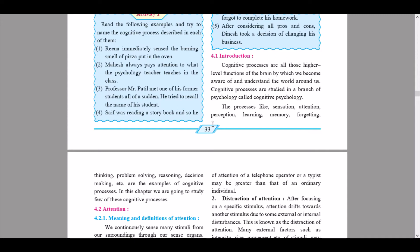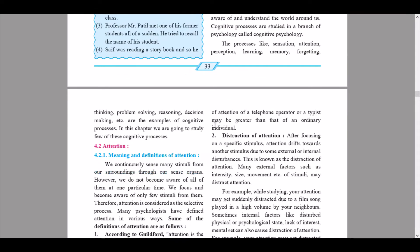Now we start with unit 4.2, that is attention. Unit 4.2.1 covers the meaning and definitions of attention. We continuously sense many stimuli from our surroundings through our sense organs; however, we do not become aware of all of them at one particular time. We focus and become aware of only a few stimuli from them. Therefore, attention is considered as a selective process.